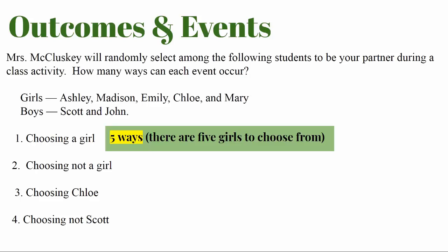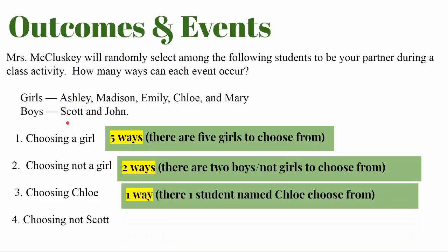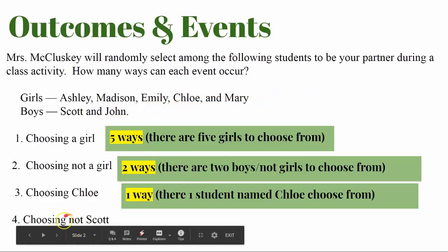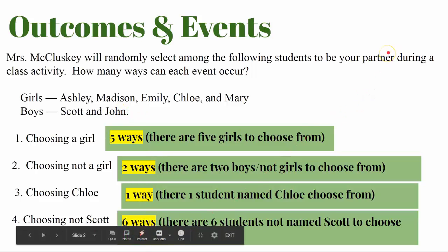Number two, choosing not a girl — there are two boys to choose, so there are two ways not to choose a girl. Number three, choosing Chloe — there's one way to choose Chloe; one of the students is named Chloe. Number four, choosing not Scott — we have to add up all the other choices: one, two, three, four, five, six. There are six students that are not named Scott to choose from.